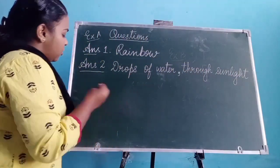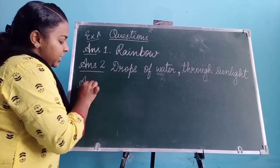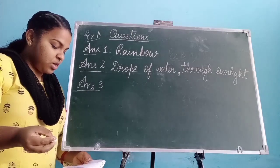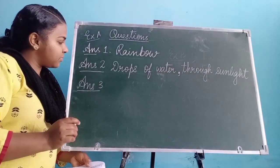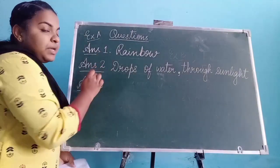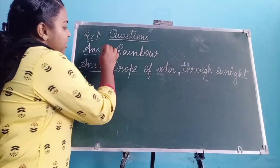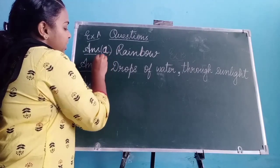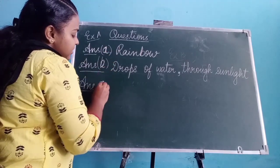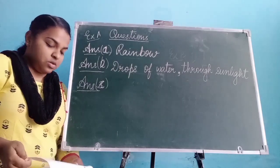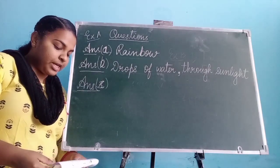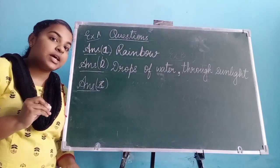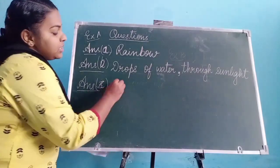Now question C: how many colors are there in the rainbow? So how many colors are there? The answer is 7.